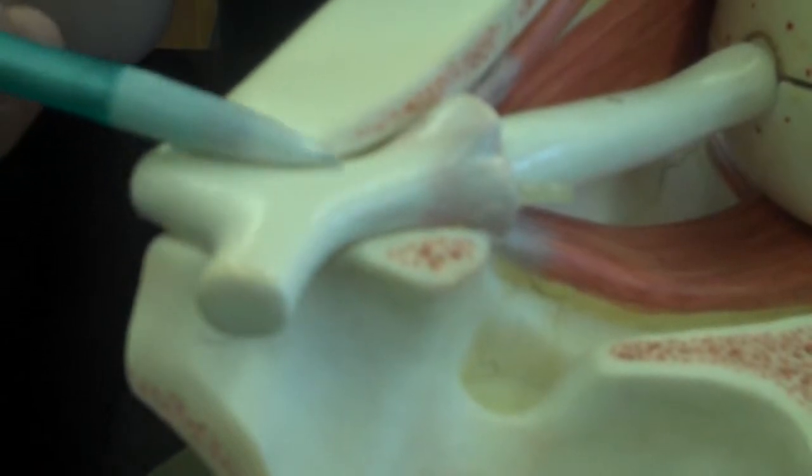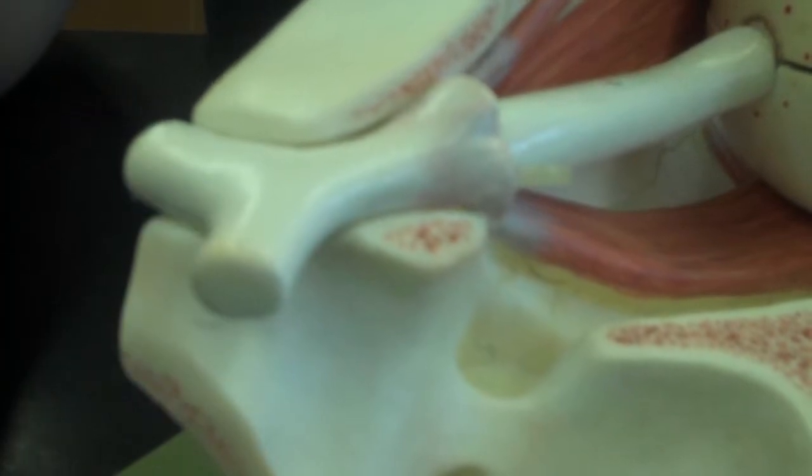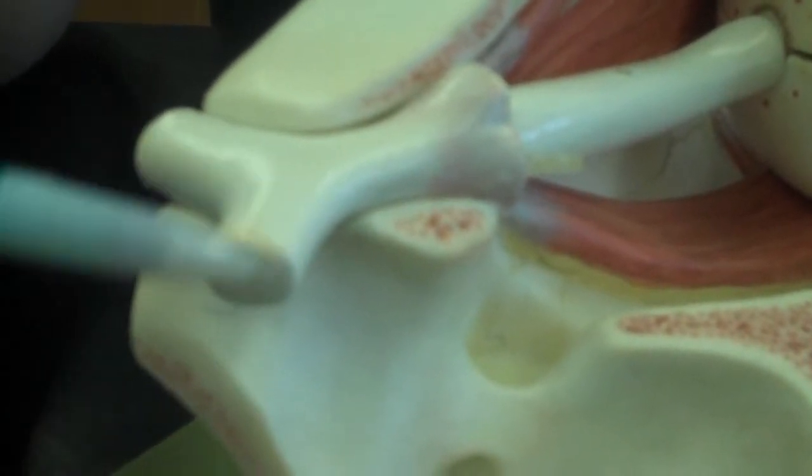And then, as the nerve goes off this way towards the brain, it is known as the optic tract.